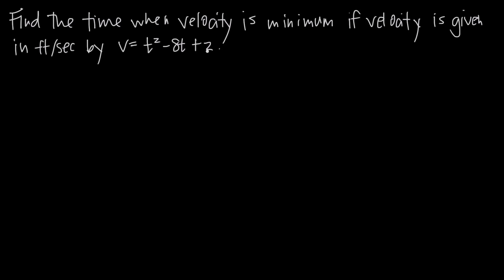As with any applied optimization problem, the very first thing you want to do is find the part of the question where you've been asked to minimize or maximize something, and identify what it is you're trying to minimize or maximize. Going straight to the word minimum, we see we're looking for the point at which velocity is minimum, so we underline that velocity is minimum.